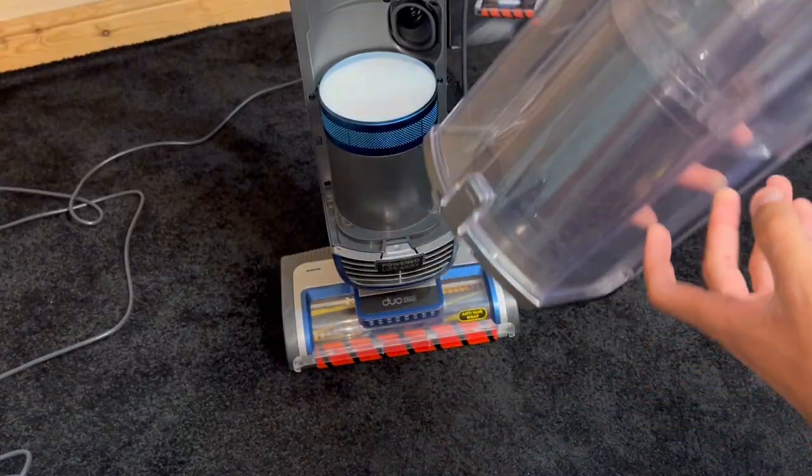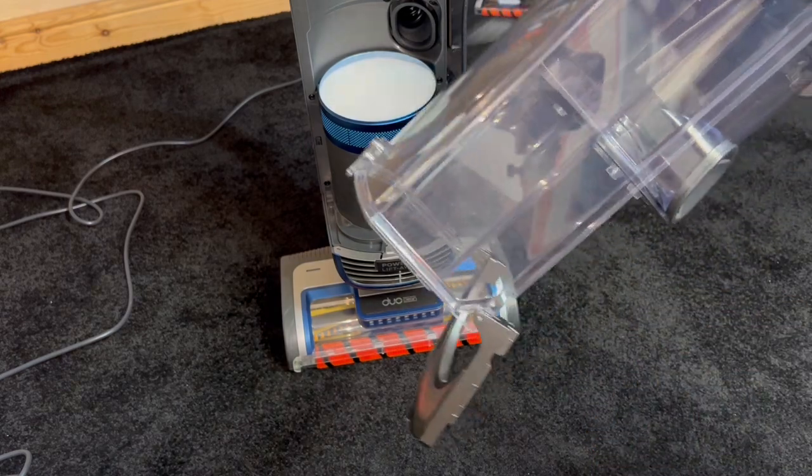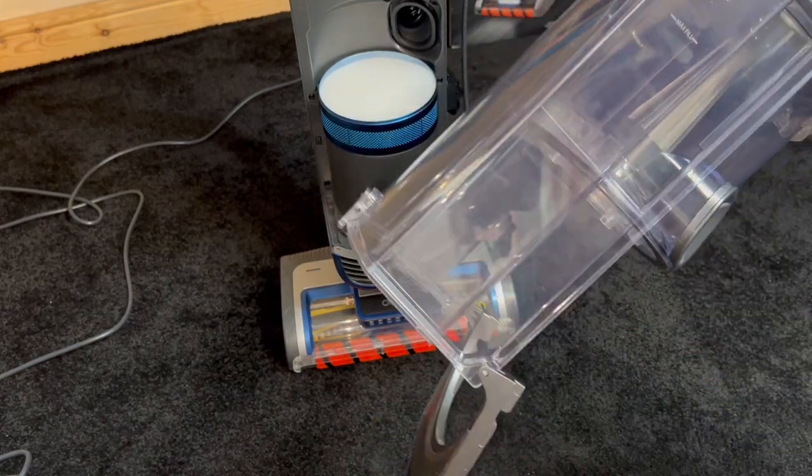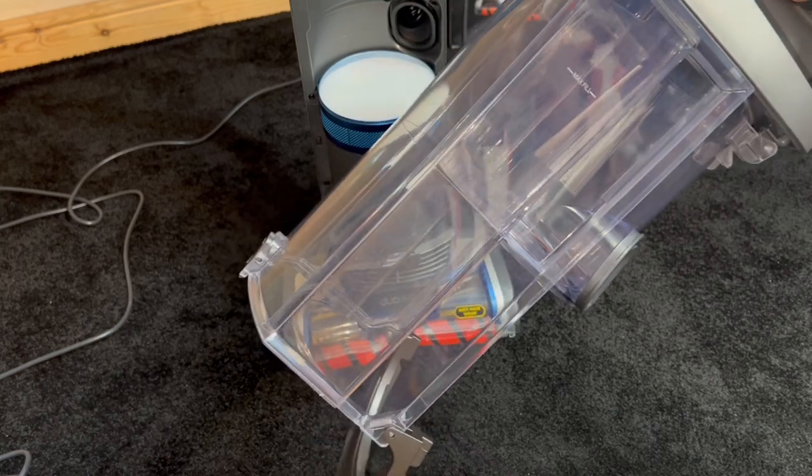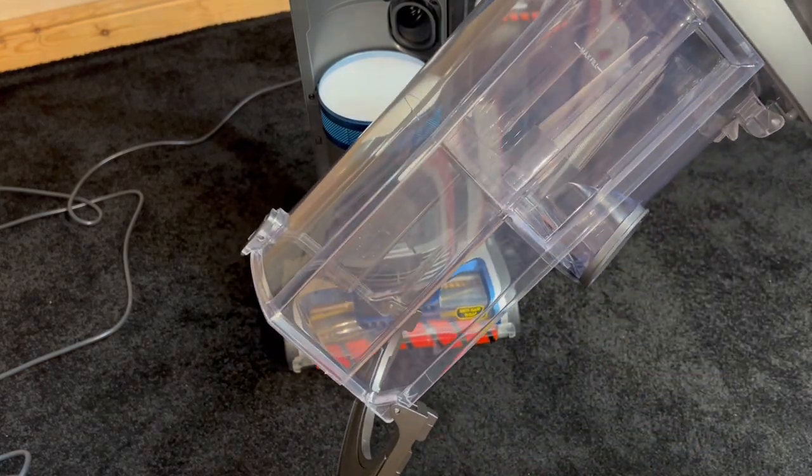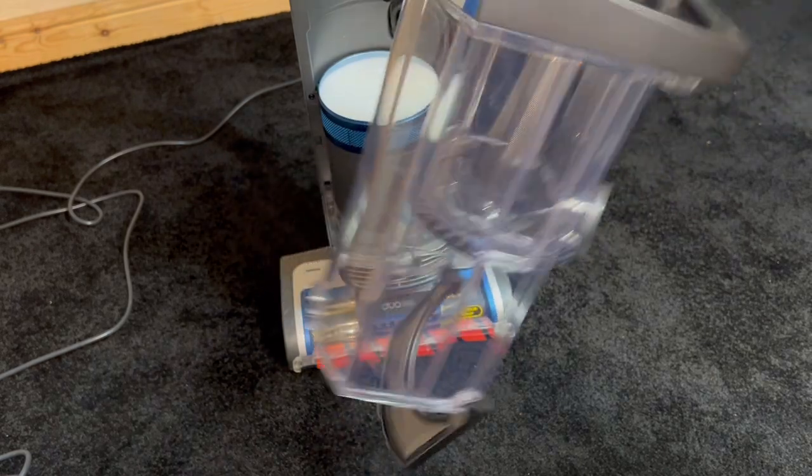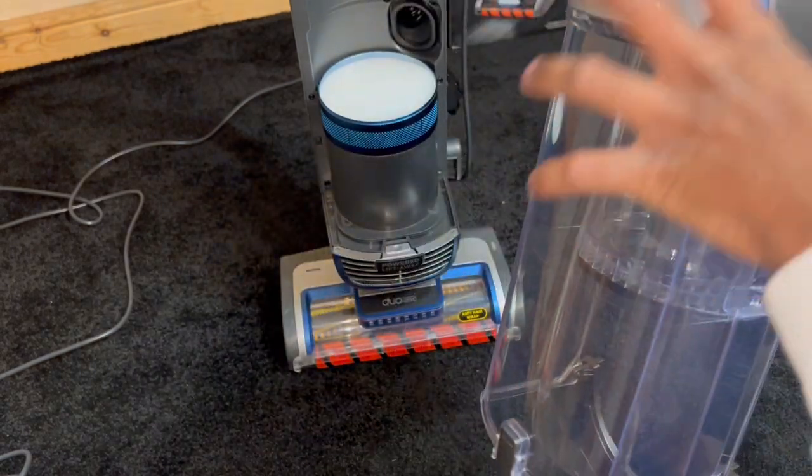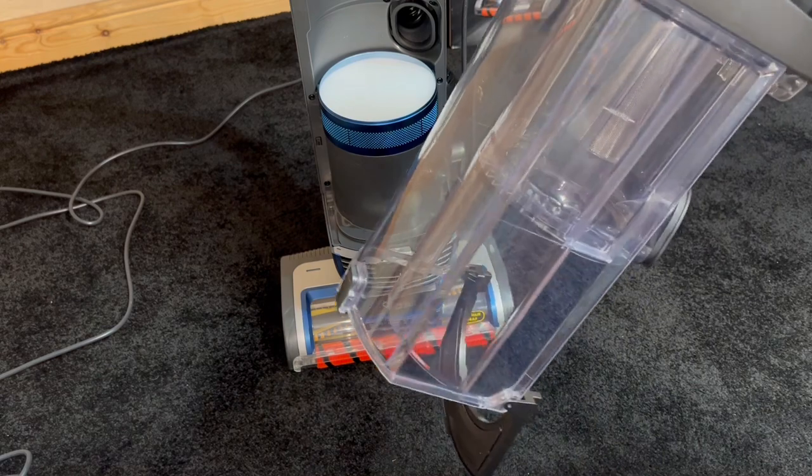What I like about the Shark's emptying design is the dirt always, 100% of the time, falls out in its full entirety. With the Dyson, there are weird fins and plastic bits sticking out in the bin which like to cling onto the dirt. You've got to really shake the bin or sometimes reach in there or take the bin off the cyclone to clean it out further.